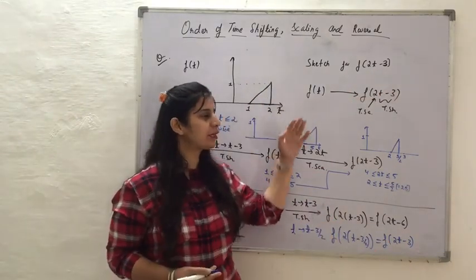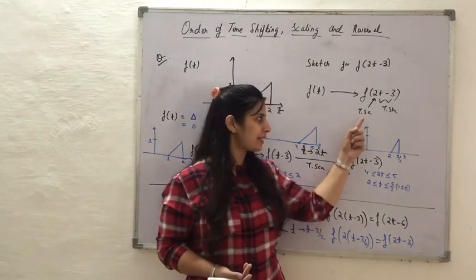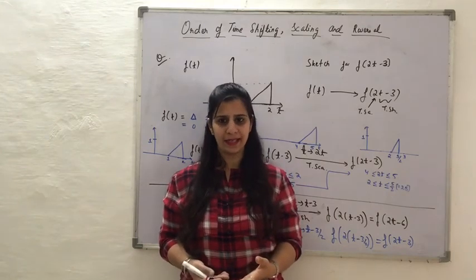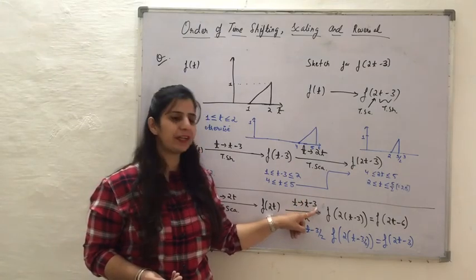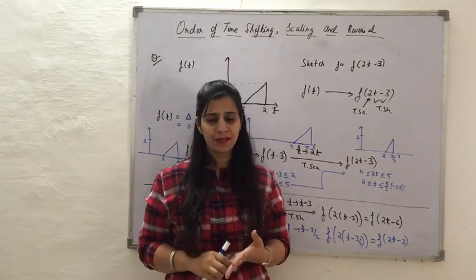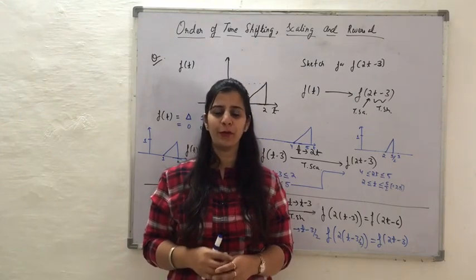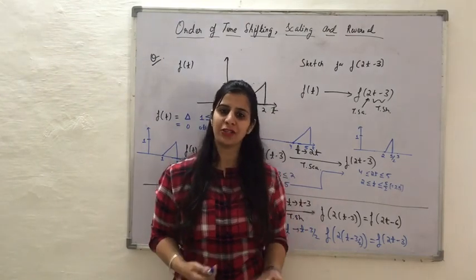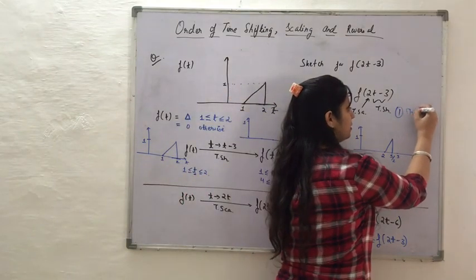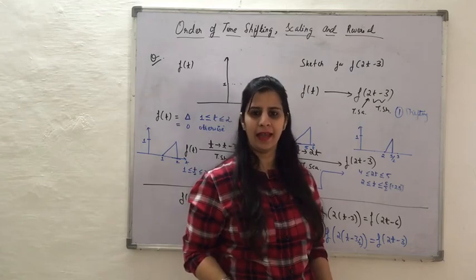The conclusion: when performing time shifting and time scaling, the natural order is time shifting first, then time scaling. If time scaling is performed first, you must divide the shifting amount by the scaling amount as a precaution. When scaling and time reversal are combined, they can be performed in any order without precaution since both only operate on t. The natural order is always time shifting first, followed by either time reversal or time scaling.